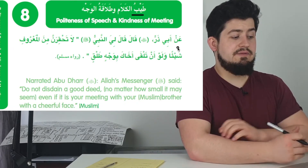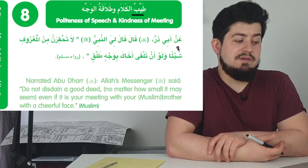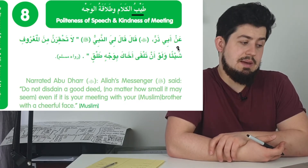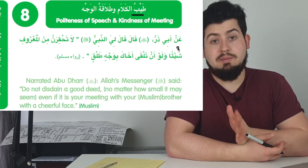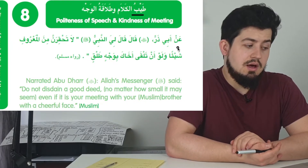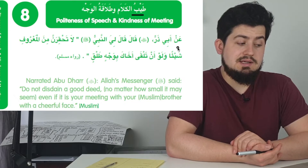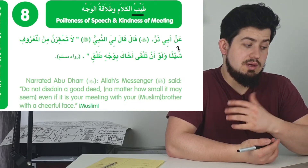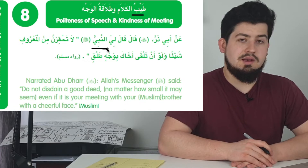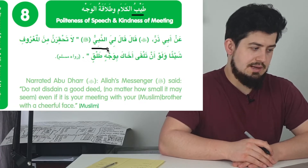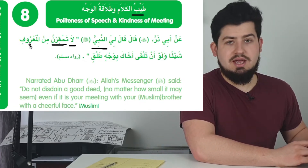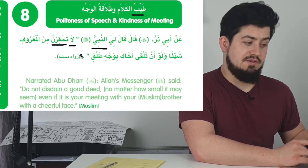Next, we have what we call the إسناد. We have عَنْ أَبِي ذَرٍّ. Abu Dharr رضي الله عنه is obviously a companion of the Messenger of Allah صلى الله عليه وسلم. قَالَ لِي — he said to me — the Prophet صلى الله عليه وسلم. He said: لَا تَحْقِرَنَّ مِنَ الْمَعْرُوفِ شَيْئًا. This is the first part.